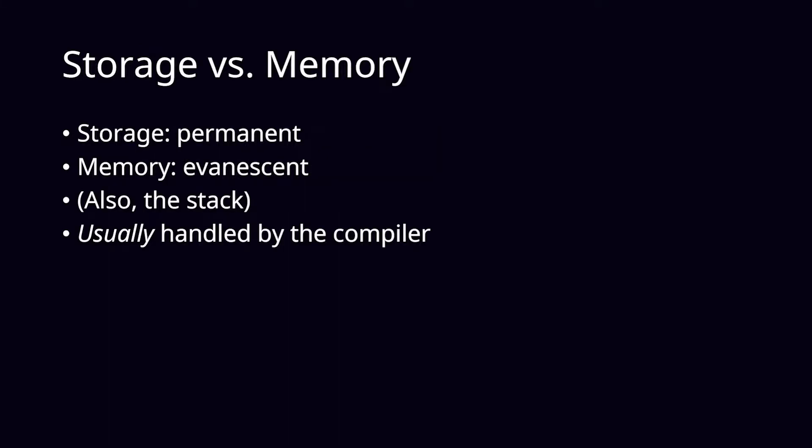So first up, what is storage and what is memory? Storage is the permanent place where we store data — when you write something to the blockchain so that it's this indelible record nobody can erase. You can compare it to saving a file on your computer, like a Photoshop image or a text document. Storage is that permanent place where we put data.